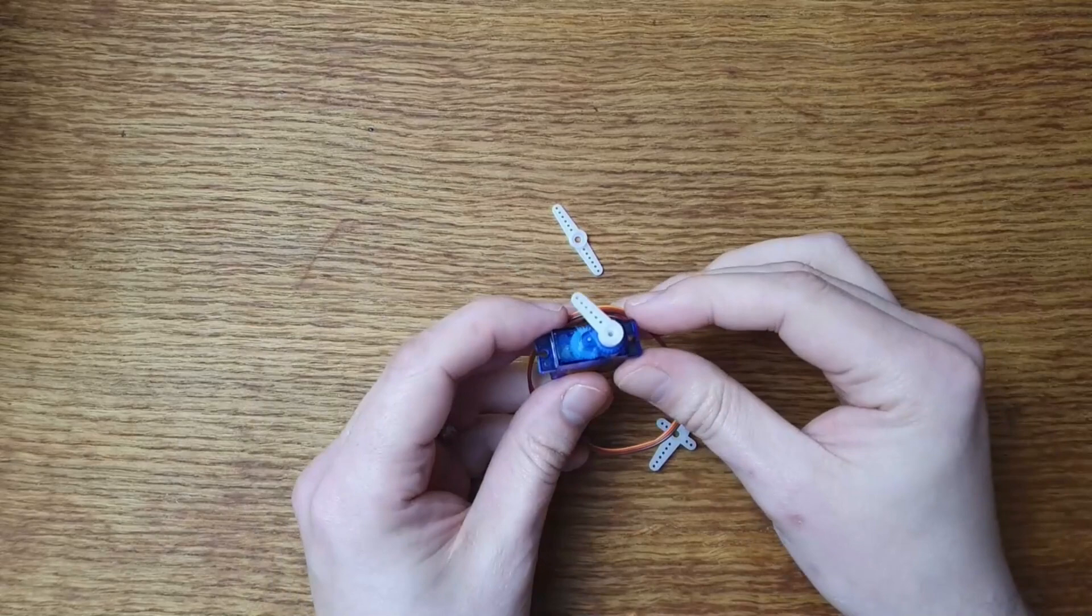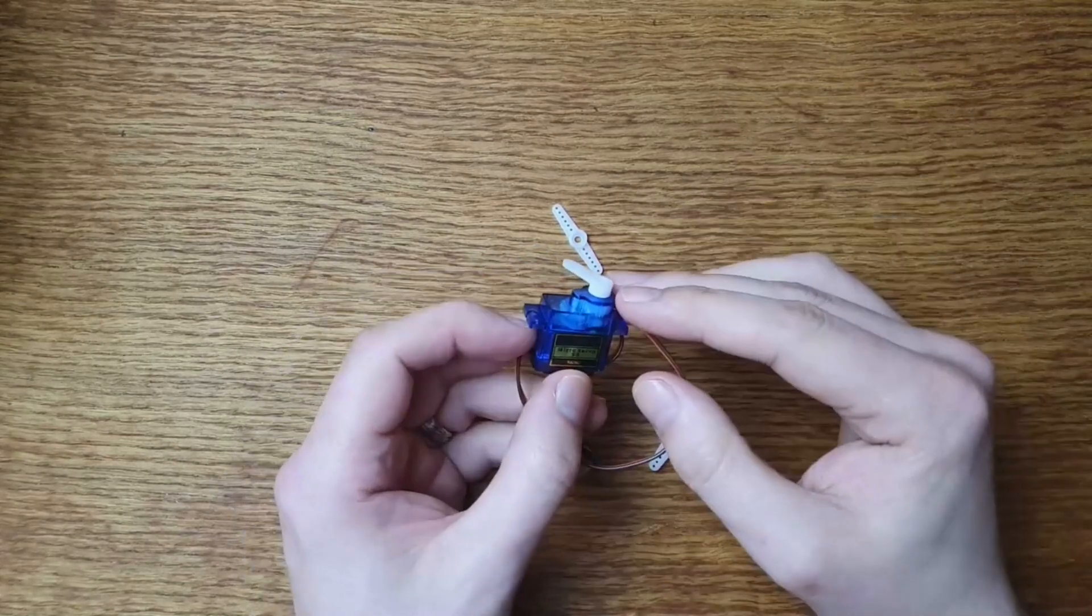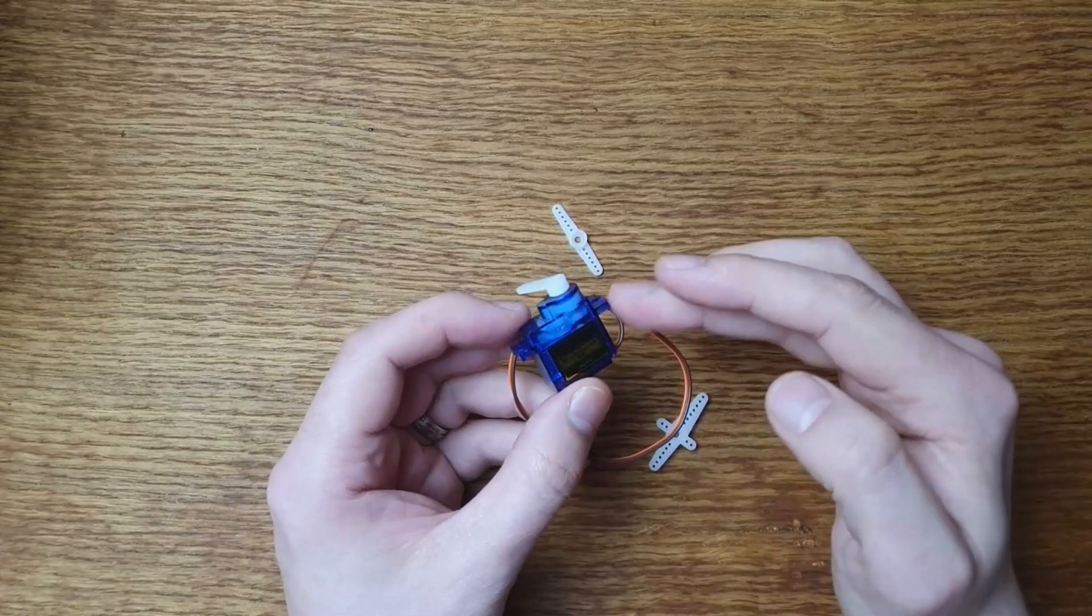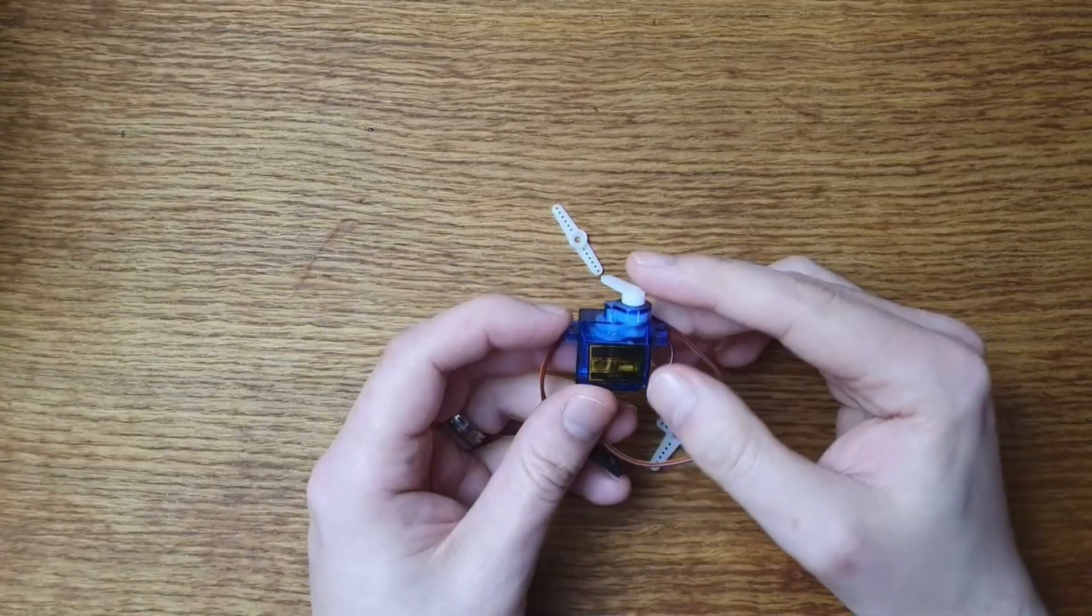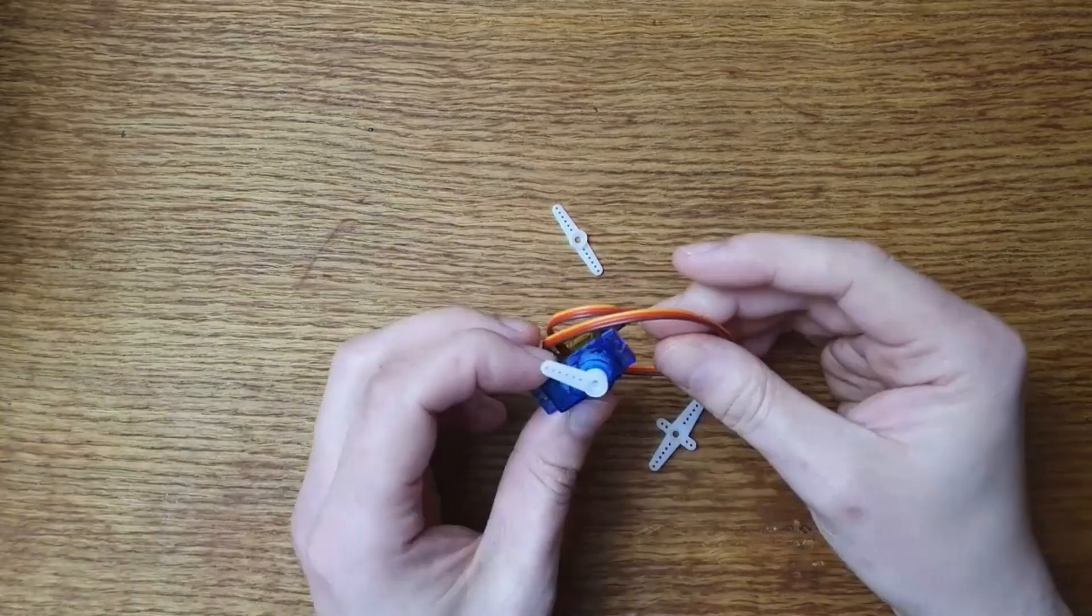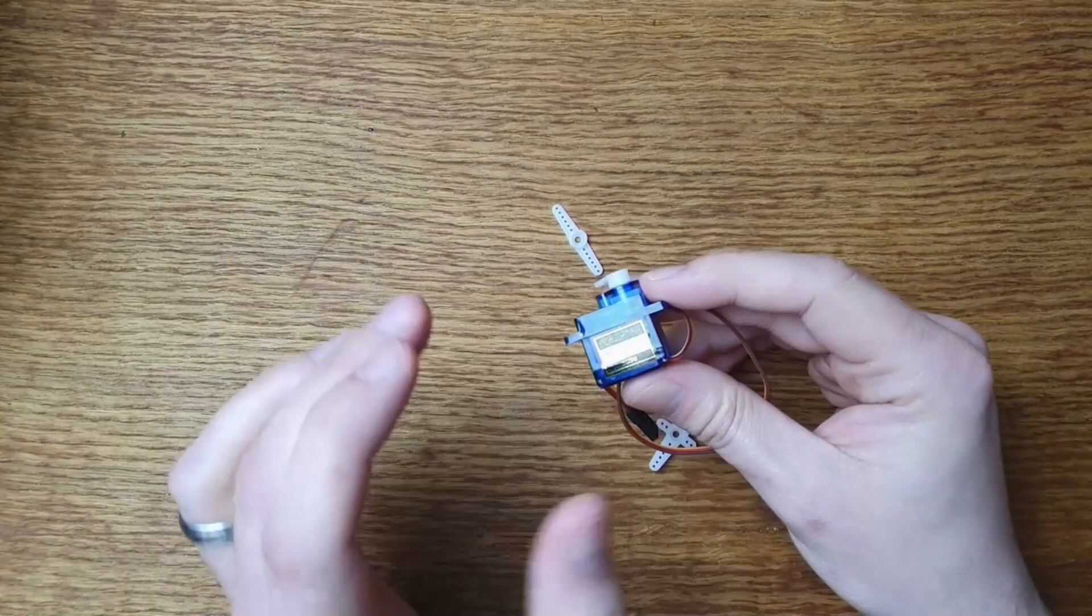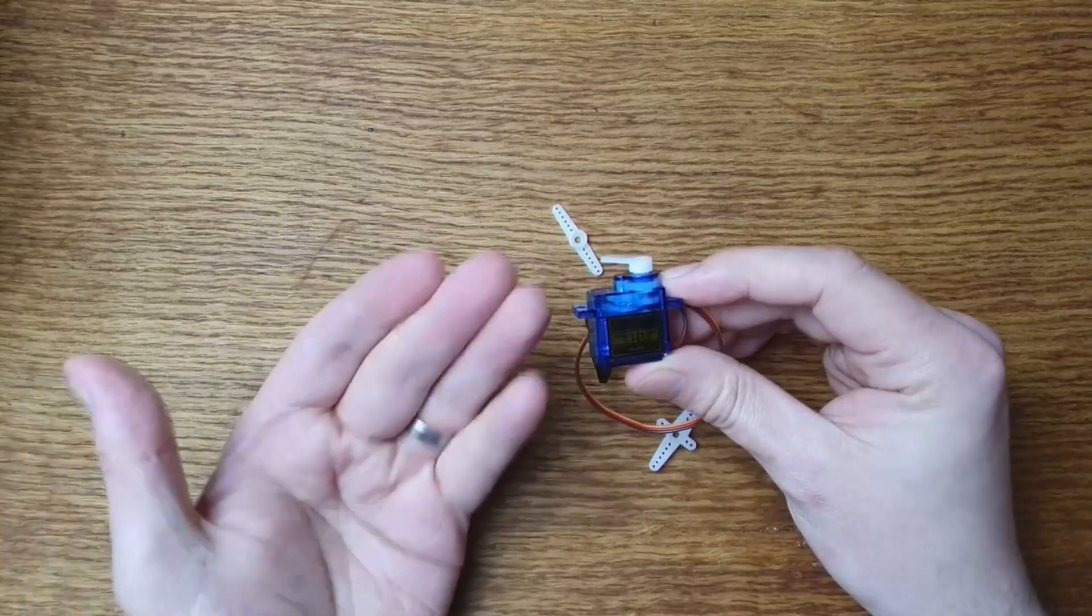Now much like the stepper motor we looked at previously, this is a very common component and quite inexpensive. If you've got one of those bulk project kits, it's probably got at least one of these things in it. And if you have a random servo, it's probably an SG90. So given how common this thing is, it's going to be very useful to understand how it works and how we can drive it.